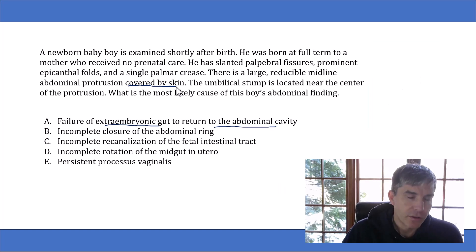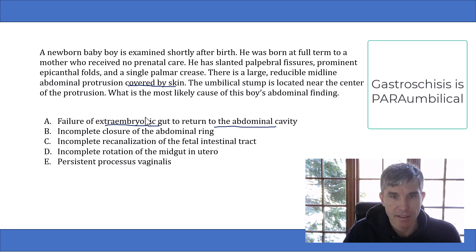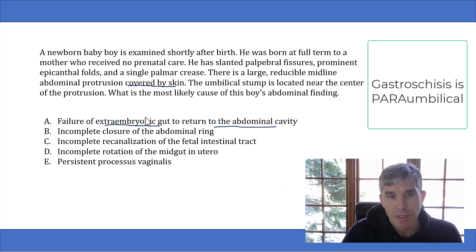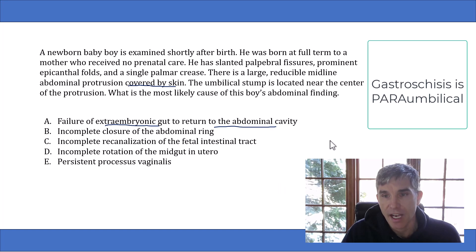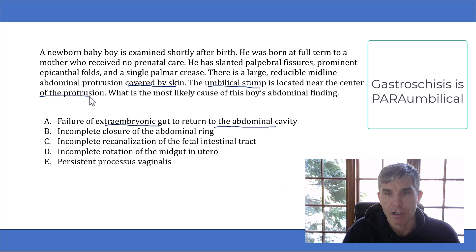You might also think choice A is describing gastroschisis, which is another abdominal wall defect where intestines and other organs are found outside the baby's body. But gastroschisis is a paraumbilical defect — the defect is to the side of the umbilical stump. Here, the question tells you the umbilical stump is located near the center of the protrusion, indicating this is an umbilical defect, not a paraumbilical defect like gastroschisis.